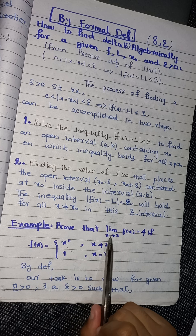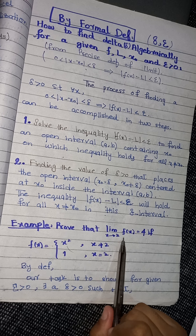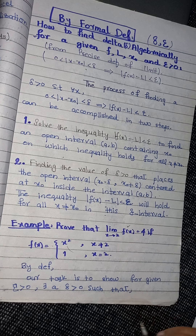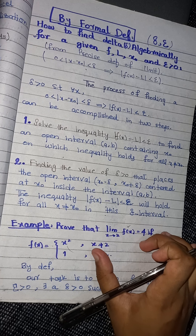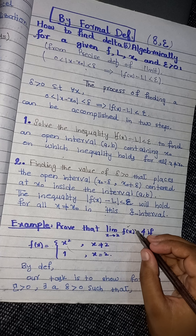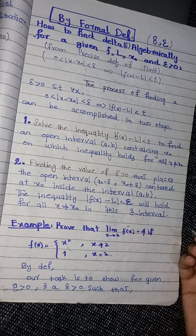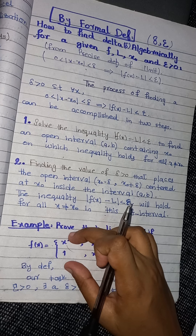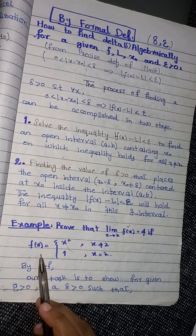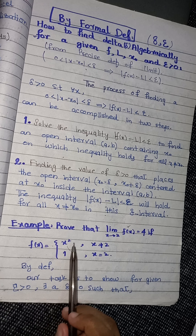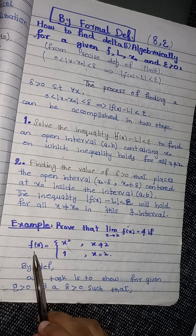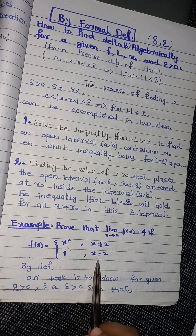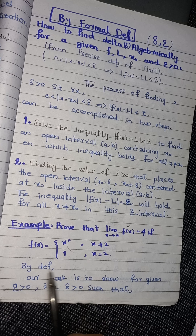Now the question is: prove that the limit as x approaches 2 of f(x) equals 4, where f(x) is a piecewise function — f(x) equals x squared when x is not equal to 2, and f(x) equals 1 when x equals 2. Previously we had a single function like x squared or 2x plus 4, but here the function is this piecewise definition.